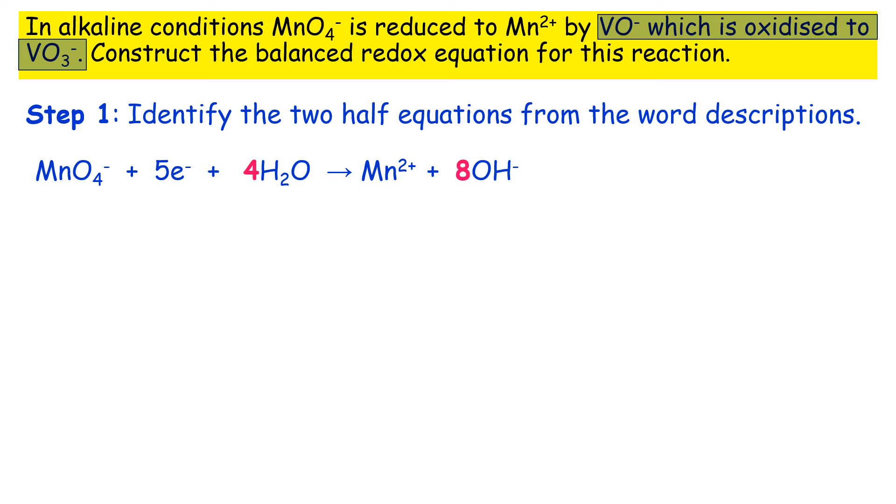So let's take the second part of that sentence where it mentions VO- being oxidized to VO3-. So I'll take you through what we've done here. Obviously this time around the electrons are on the right hand side because it's a loss of electrons. So going from +1 to +5 means that you've got a loss of four electrons.